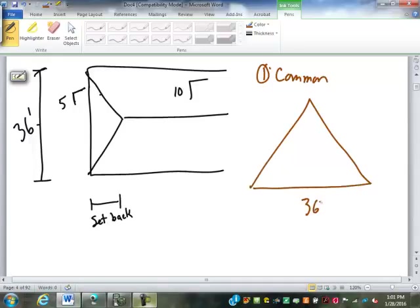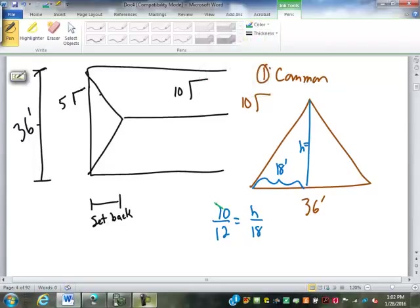We have a 36 foot span and we have a 10-12 slope. We have an 18 foot run to find our height. 10 over 12 equals H over 18. And a quick cross multiply and divide gives us that H is 15 feet.